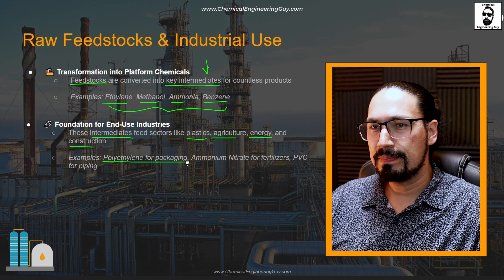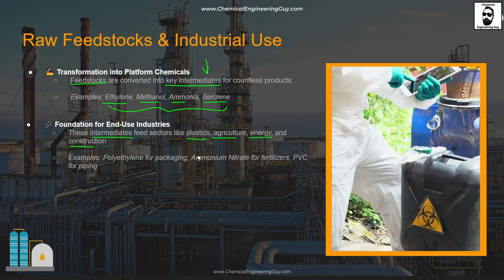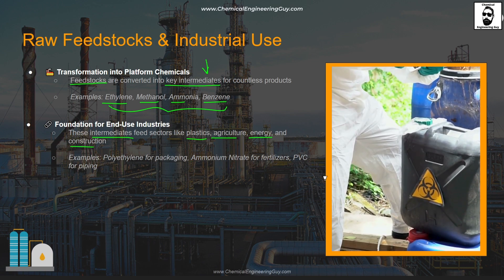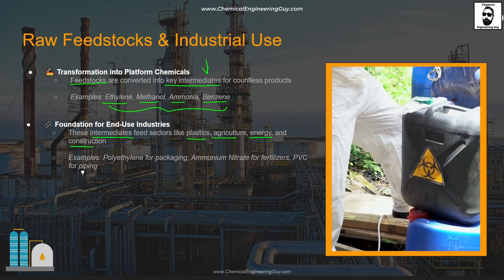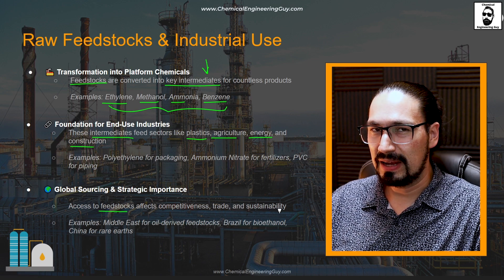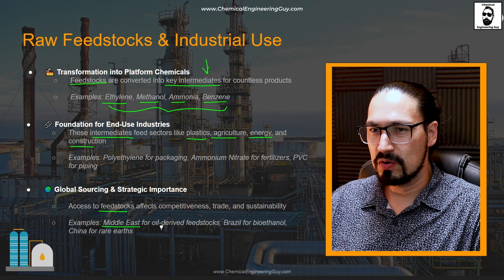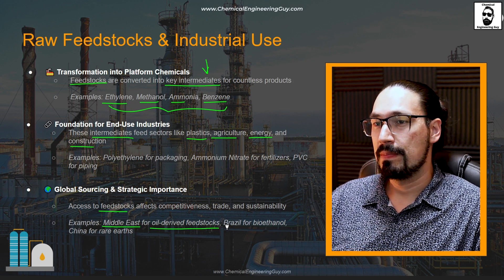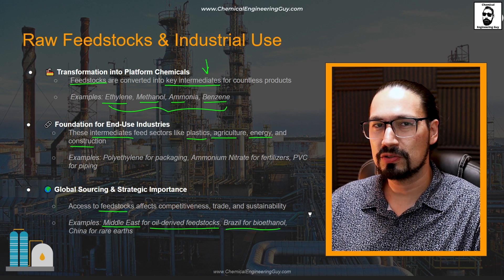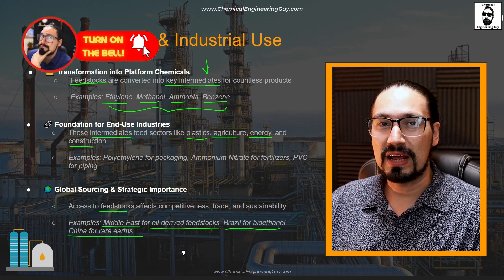We listed some examples right here: polyethylene for packaging, so the actual end product will be the package; ammonium nitrate as the end product for a fertilizer, made by mixing ammonia with nitric or nitrous acid; or PVC for piping. Finally, global sourcing and strategic importance — access to feedstocks affects competitiveness, trade, sustainability, and even geopolitical safety. Good examples are the Middle East for oil reserves, Brazil as a hub for bioethanol, and China for rare earth metals used in electronics.